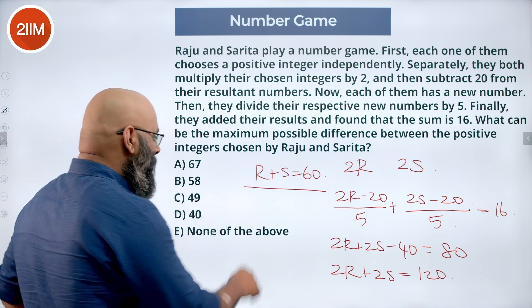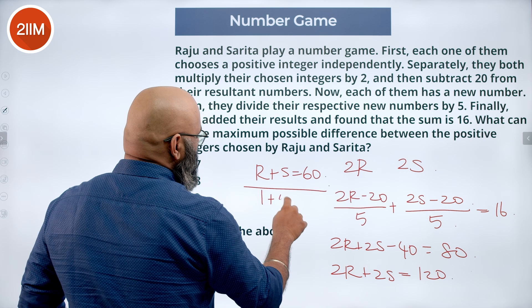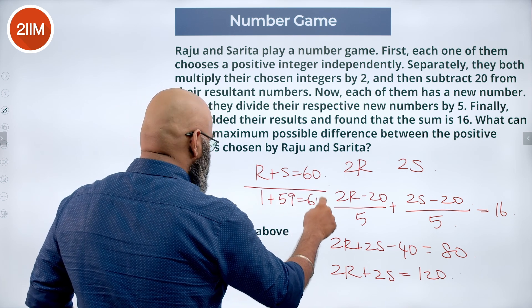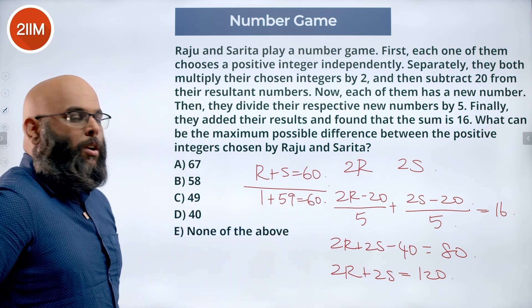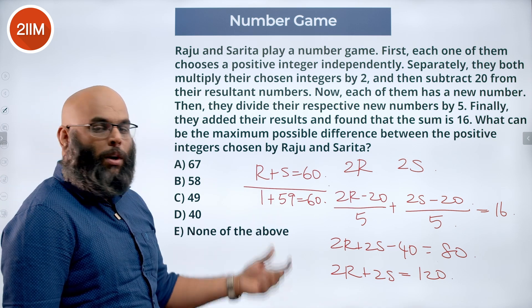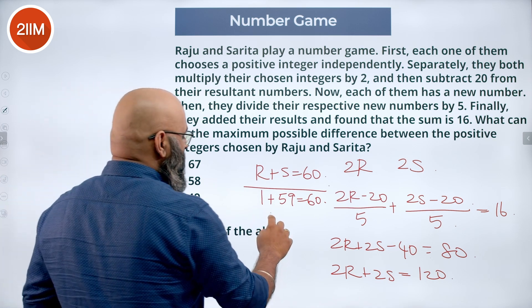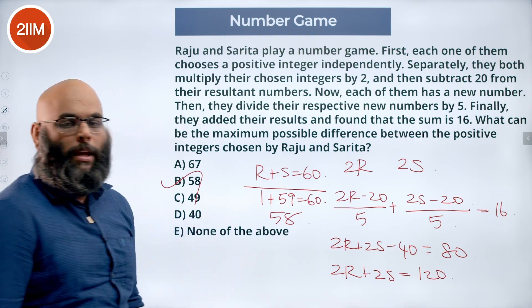That means the only combination that we have is 1 plus 59 gives me 60. Now in that case, the difference between the two numbers chosen is 58. Option B.